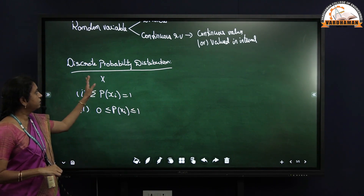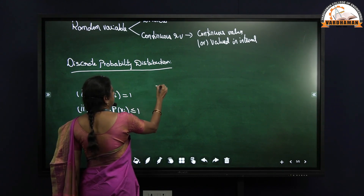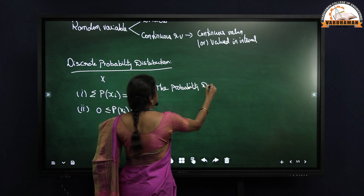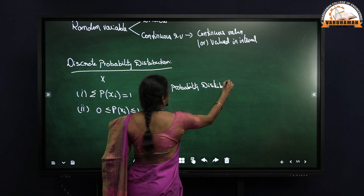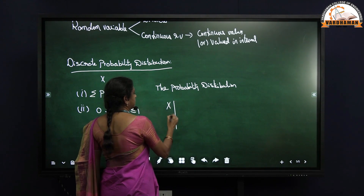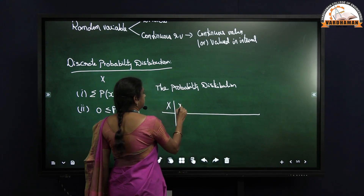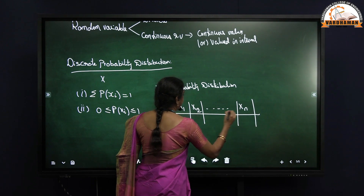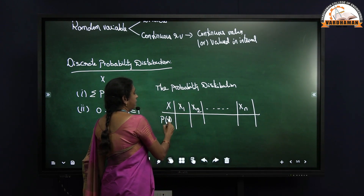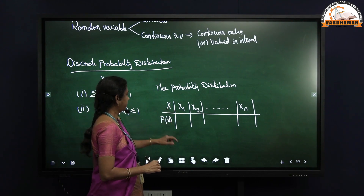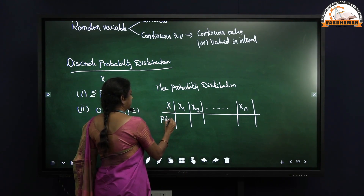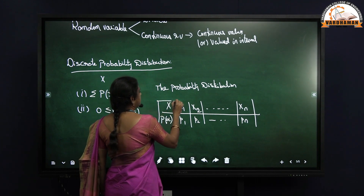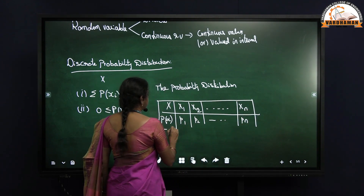Then the probability distribution is given by defining the random variables X1, X2, so on to XN — since it is for a countable number of values, we take it till XN — and the corresponding probability values P1, P2, so on to PN. This gives us the probability distribution of a discrete random variable.